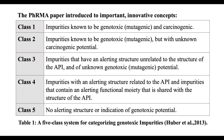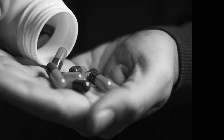Class one impurities are known to be genotoxic, mutagenic, and carcinogenic. Class two are known to be genotoxic and mutagenic but with non-carcinogenic potential. Class three have an alerting structure unrelated to the active pharmaceutical ingredient with non-genotoxic mutagenic potential. Class four have an alerting structure related to the parent active pharmaceutical ingredient. Class five have no alerting structure or indication of genotoxic potential.